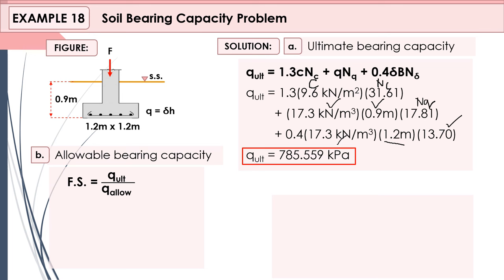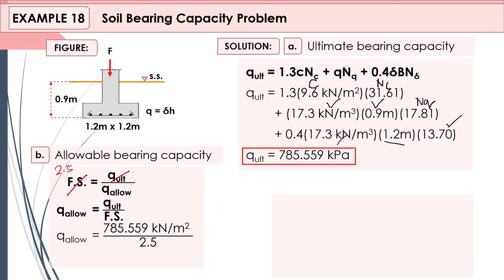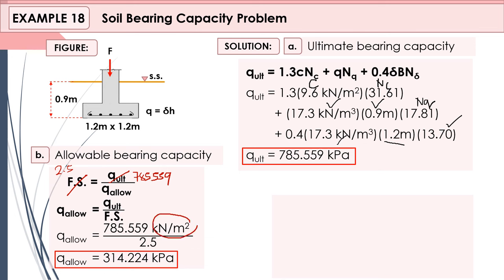For the allowable bearing capacity, we use the factor of safety formula. Given that the factor of safety is 2.5 and qu = 785.559 kPa, you can derive or shift-solve the equation. The allowable bearing capacity is equal to 314.224 kPa. The units remain the same since the factor of safety is dimensionless.